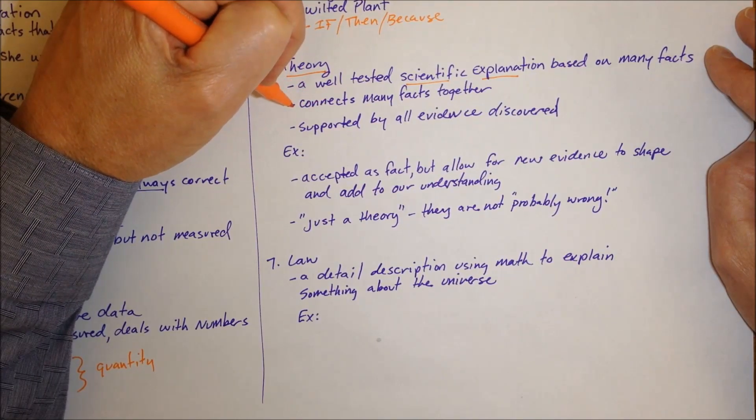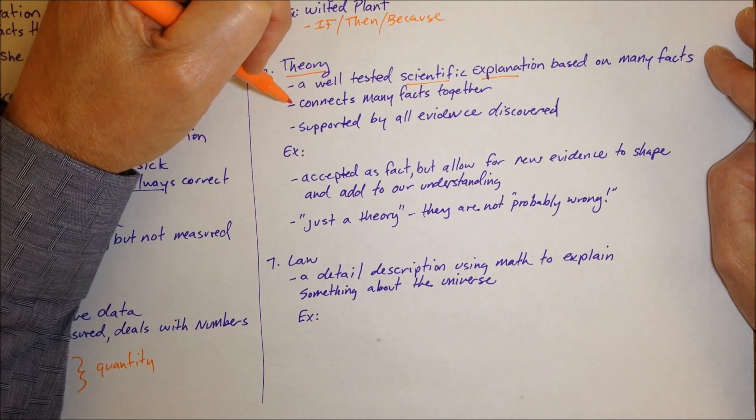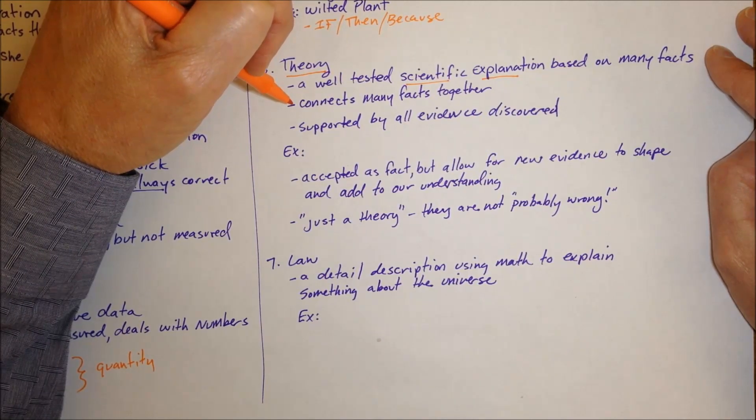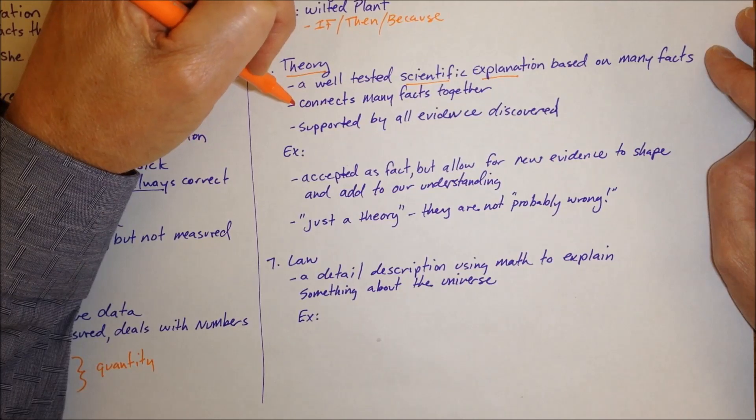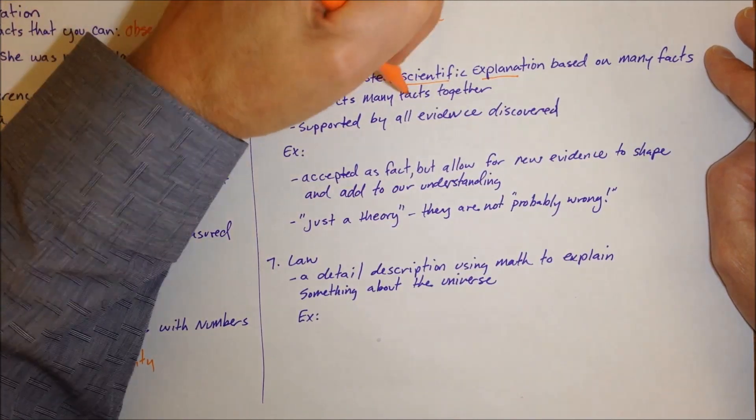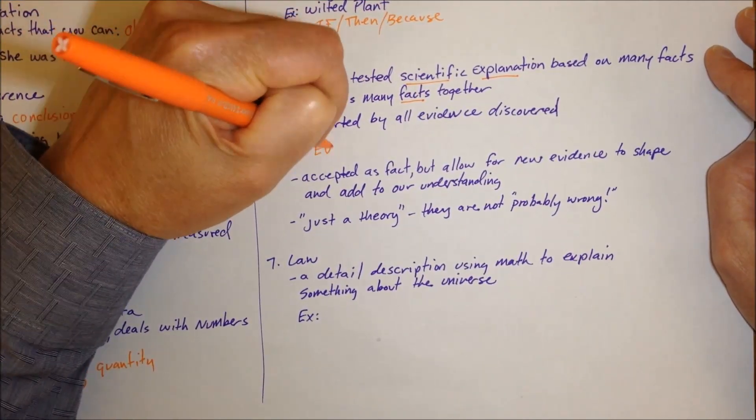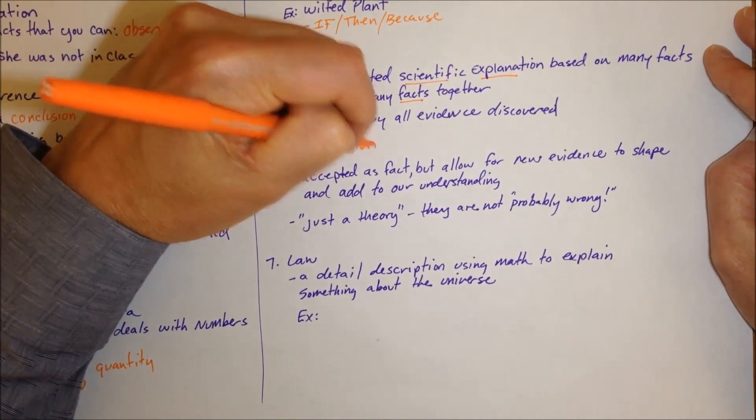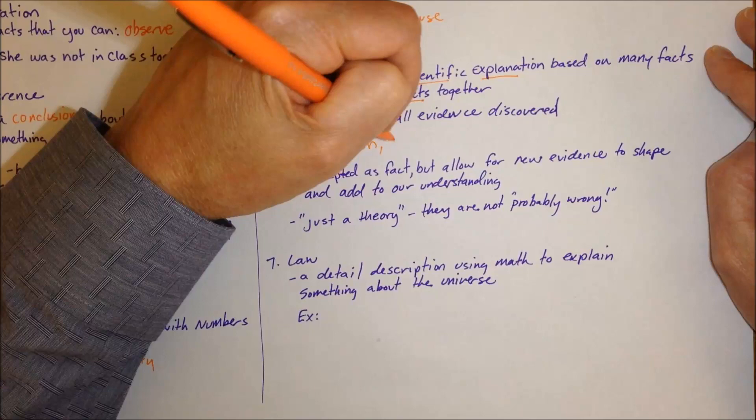Theories often connect a lot of different facts together. For example, evolutionary theory which is a theory that organisms change over time. We can look at DNA and see relatedness between organisms. We can look at fossils and see changes of them over time. We can look at where life is placed on the planet and all these little facts help us understand the theory of evolution that things have changed over time.